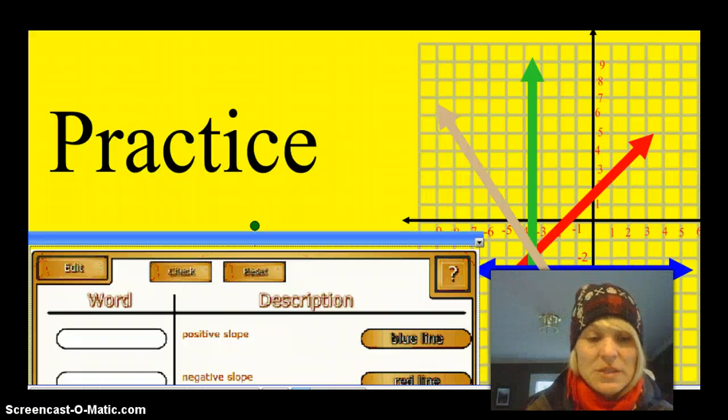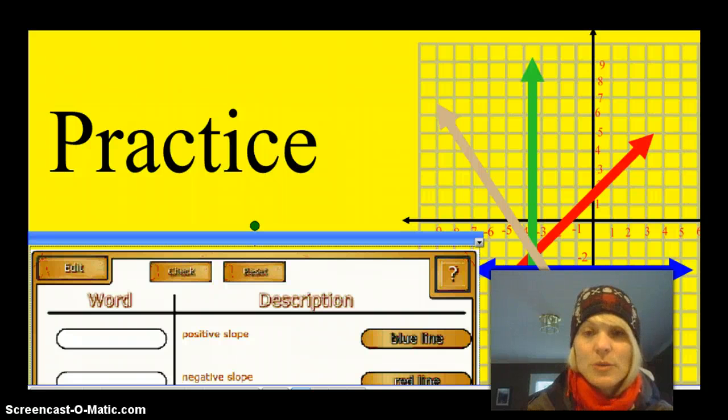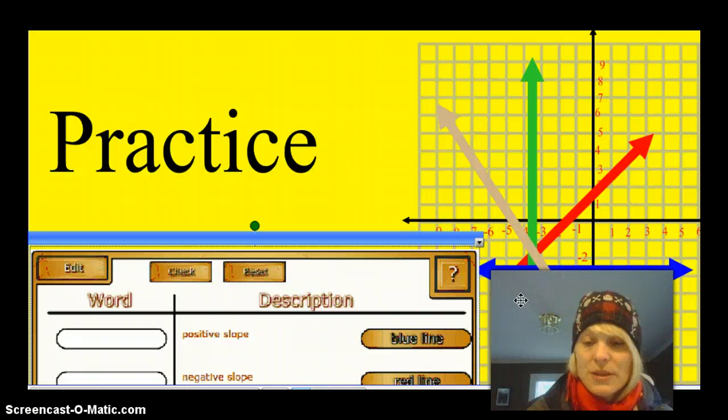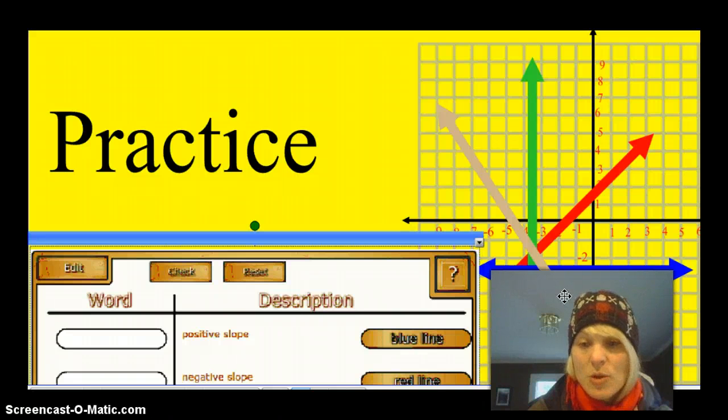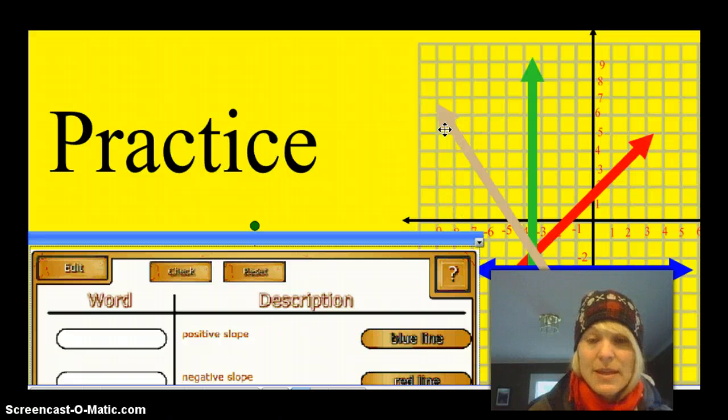We're just going to review some basics tonight so that when you come into class tomorrow, you'll be ready to go with our slope activity. So let's look over at these lines over here. If you remember from last year, you read a graph from left to right, just as if you read a book. So to determine what type of slope it is, you have to read it from left to right. Starting at the left and following to the right, this tan line is decreasing.